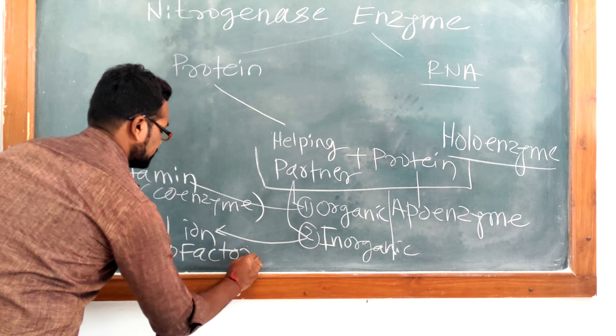Nitrogenase enzyme is an example of a holoenzyme. The reason we discussed this is that nitrogenase enzyme is a holoenzyme where it contains protein as well as one prosthetic group. The prosthetic group is generally a metal ion; that is why nitrogenase enzyme is also known as a metalloenzyme.